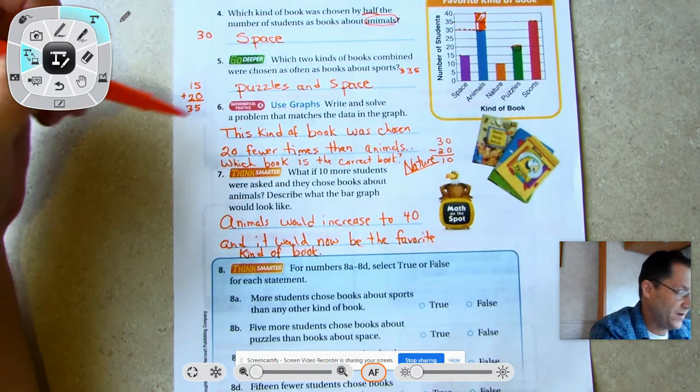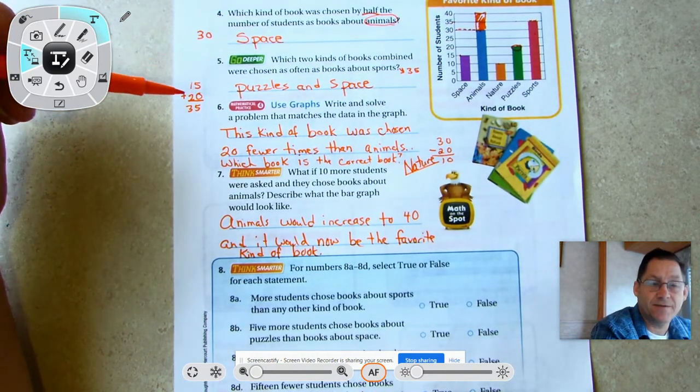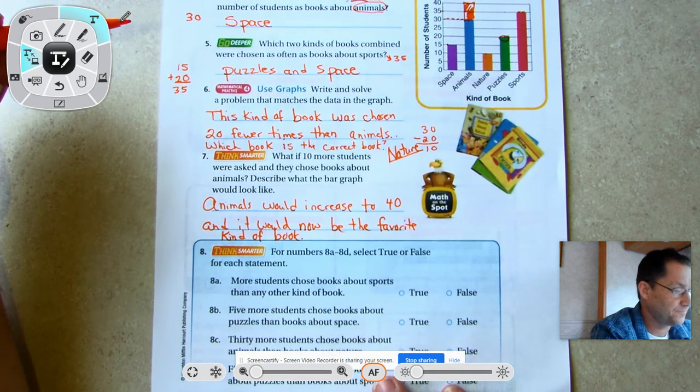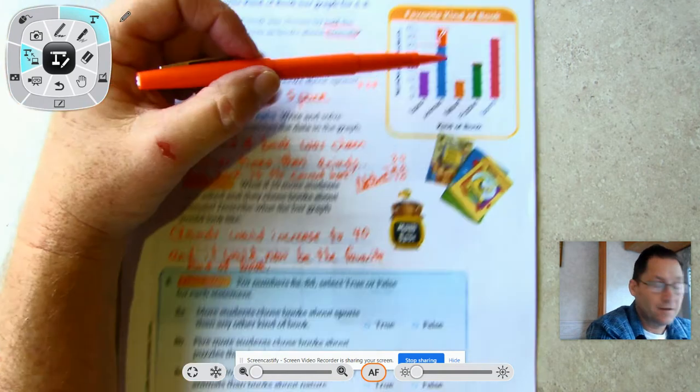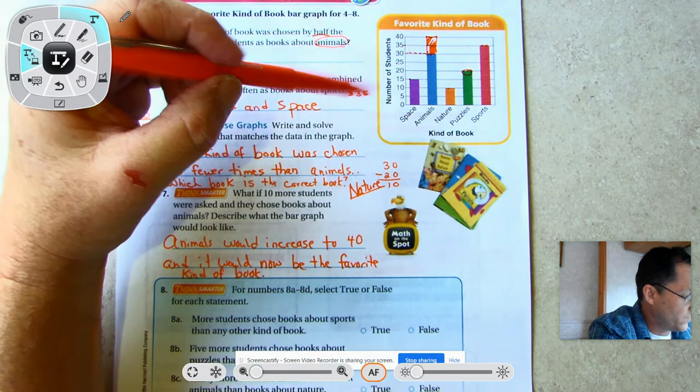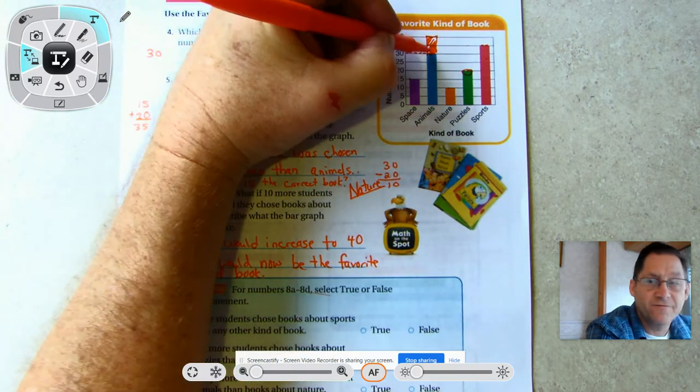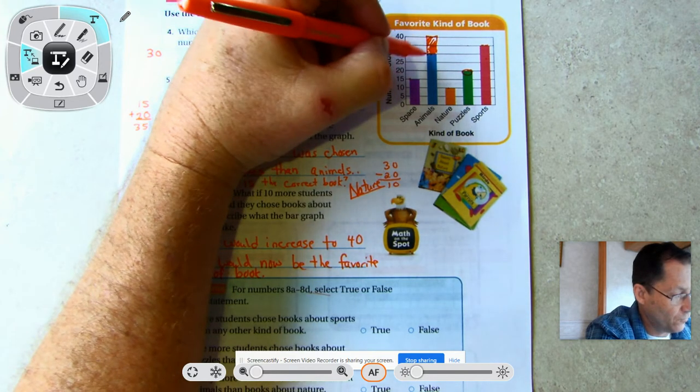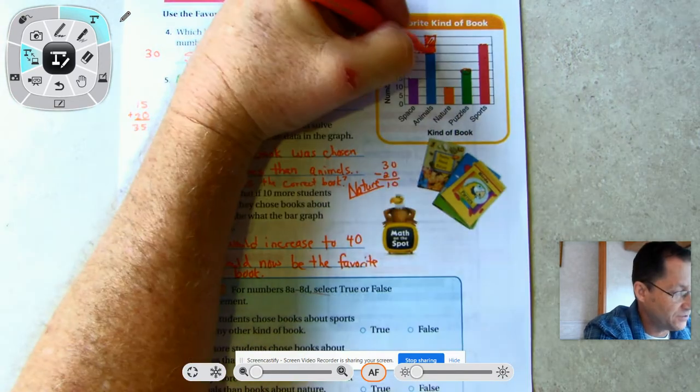For numbers 8a through 8d, select true or false for each statement. More students chose books about sports than any other kind of book. Now these questions refer to the table before we shaded in the animals. This is not fair. When we're referring to these questions, the animals is 30, space is 15, nature is 10, puzzles is 20, and sports is 35.